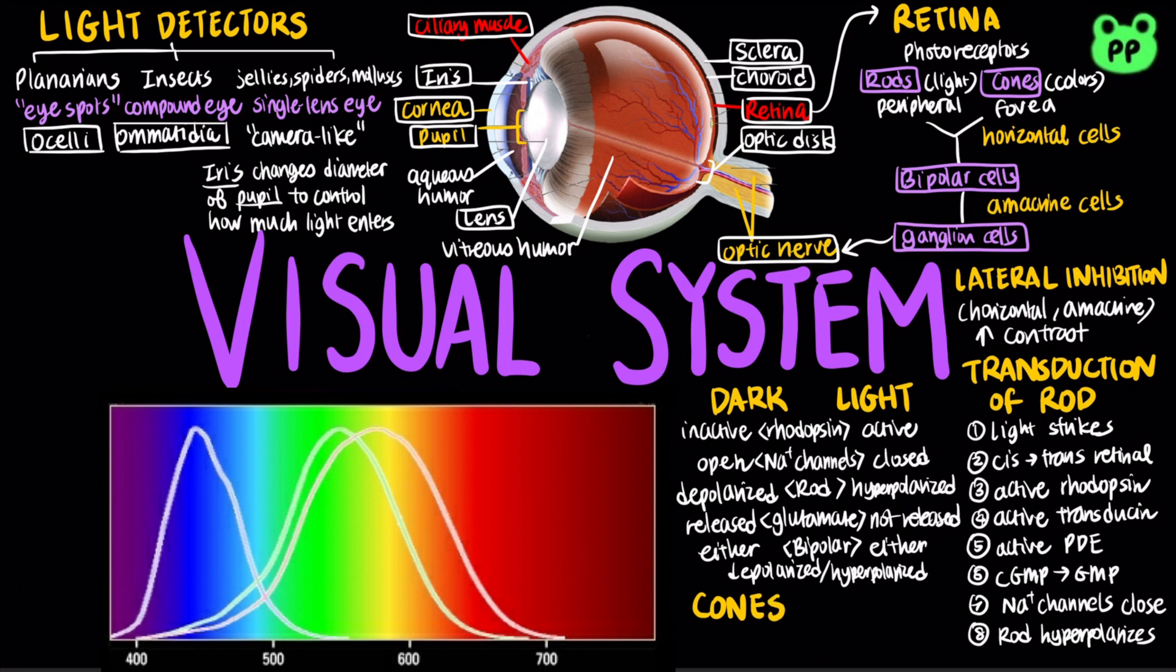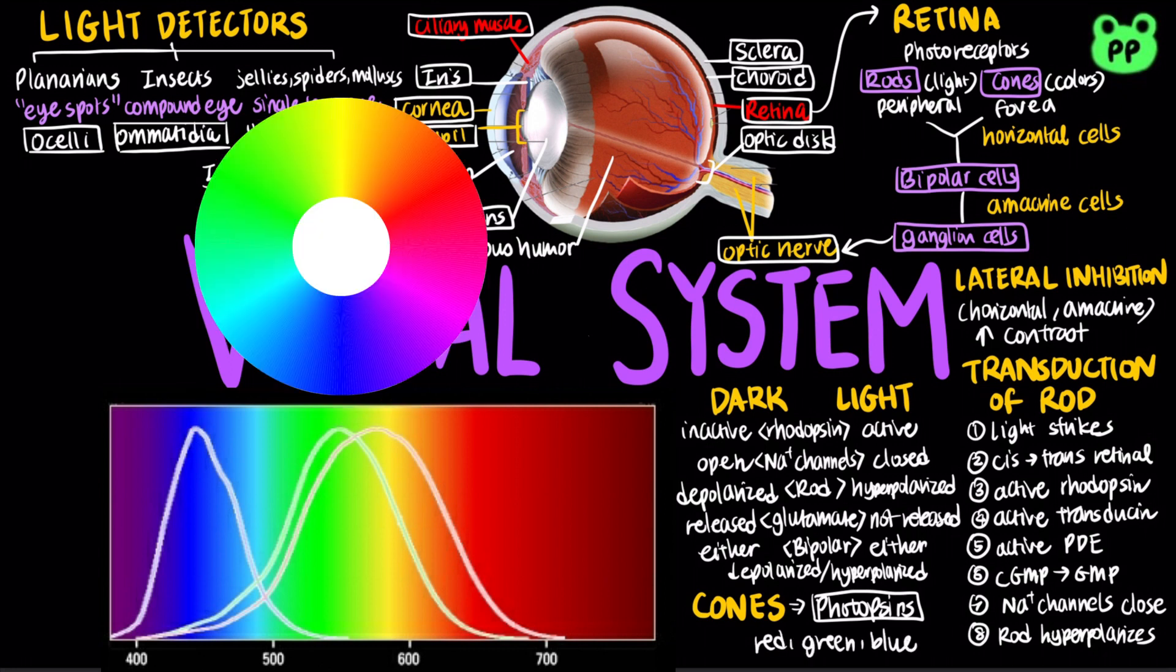The cones contain three pigments called photopsins that detect light of different wavelengths: red, green, or blue. Essentially, all the colors we see are encoded by these three photopsins.